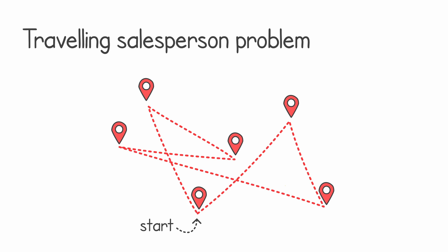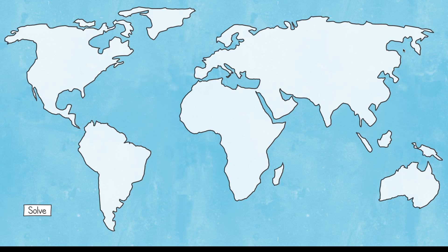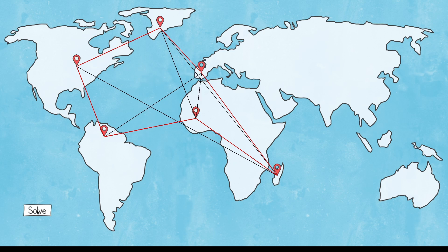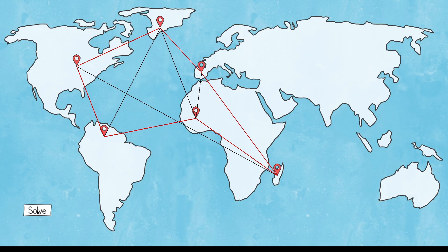One way to solve this problem is to check all combinations — this is called the brute force approach. I have written a program that places different points on a world map and calculates the shortest distance through all of them. Let's place a few points: Spain, the US, North Africa (Mauritania), Greenland, Brazil, and Madagascar. When I click Solve, the program tries every single permutation of the points, keeps track of the shortest distance shown with the red path, and once it finishes going through all permutations we are left with the shortest path.